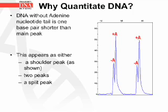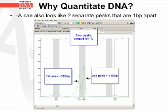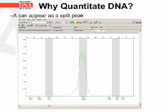DNA without the adenine nucleotide tail is one base pair shorter than the main peak and is referred to as minus A because it is lacking the A nucleotide. This can appear as either a shoulder peak as shown in the diagram, two separate peaks, or a split peak. Here we have a diagram where the minus A is causing there to be two separate peaks — notice that both peaks are only one base pair apart. Minus A can also appear as a split peak, where the top of the peak instead of having one point will have two points.